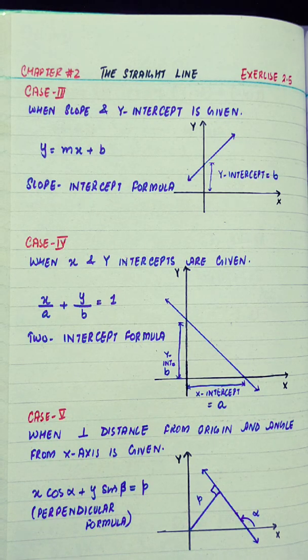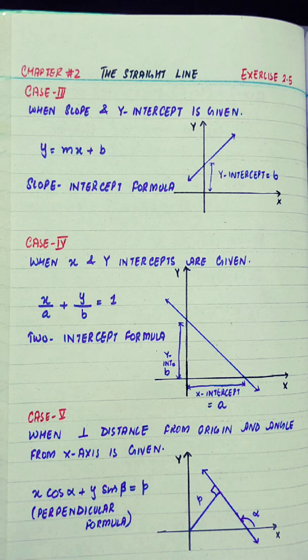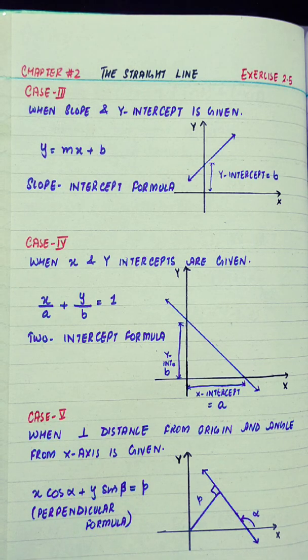Case 3 is when slope and y-intercept is given, then we use y equals mx plus b. This formula is also known as the slope-intercept formula.